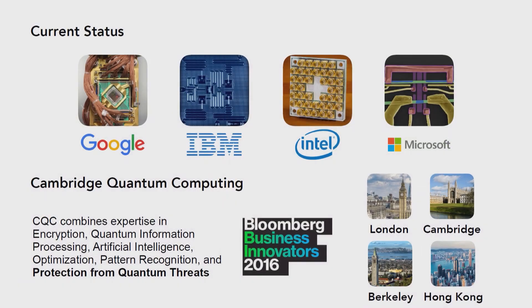So where do we stand right now? Quantum computers really do exist — it's not just science fiction. I've listed the top four players, and this has escalated incredibly quickly. Just last July, Google was in the lead at nine qubits. Then in October, Intel jumped to 17. In November, IBM announced a 50-qubit machine. And just last month, Google announced a 72-qubit machine. That's how quickly this is escalating, and it really is happening right now. The company I work for, Cambridge Quantum Computing, specializes in exactly this type of quantum encryption and quantum security. If you'd like to discuss this in terms of blockchain or any type of financial asset, please find me later — I'd be glad to talk with you. Thank you.